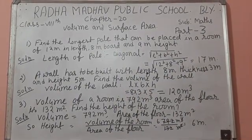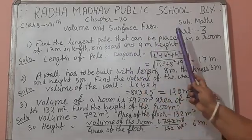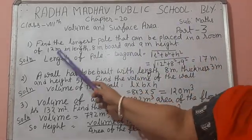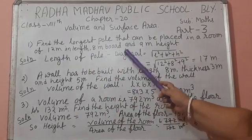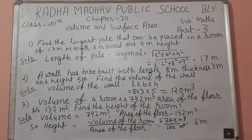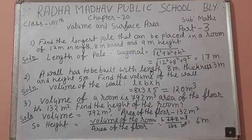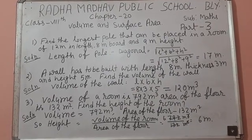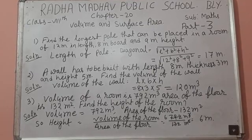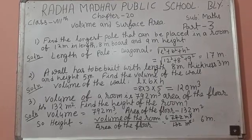First question is: find the longest pole that can be placed in a room of 12 meter length, 8 meter breadth and 9 meter height. That means here we find out the diagonal of the room. When we join one corner to the opposite corner, we get the diagonal.